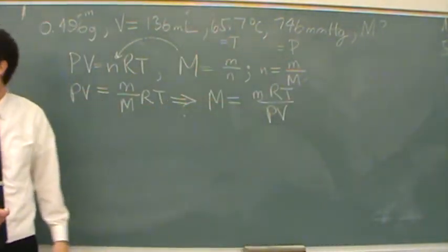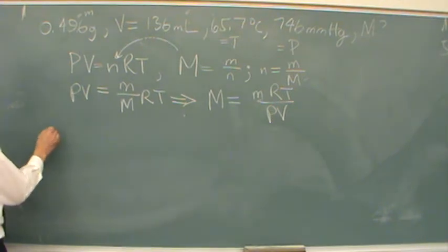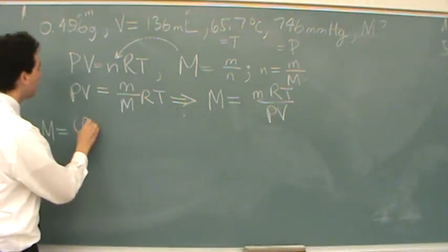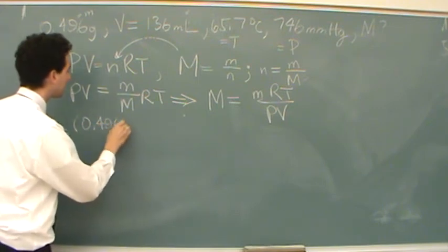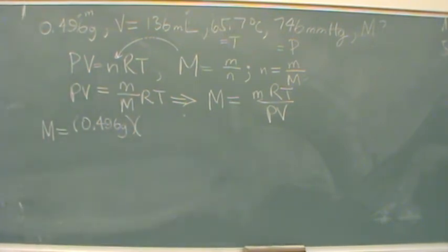Again, based on our capital R. So capital M, molar mass, is mass, 0.496 grams. So the ideal gas law is going to be one of those laws, one of those formulas. From now on, we're going to have very few formulas that don't use SI units, and this is just going to be one of those rare ones.